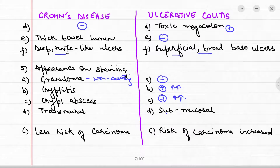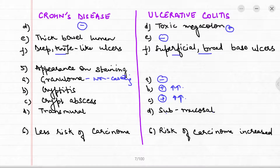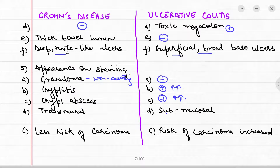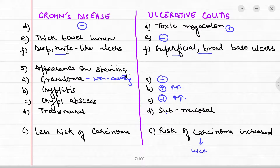There is transmural involvement in Crohn's disease but only submucosal involvement in ulcerative colitis. The risk of carcinoma is less in Crohn's disease, but the risk is increased in ulcerative colitis, probably due to repeated ulceration.